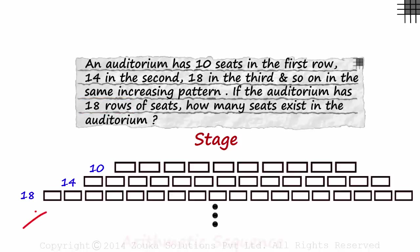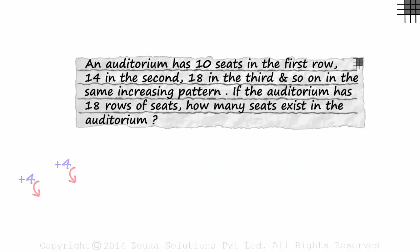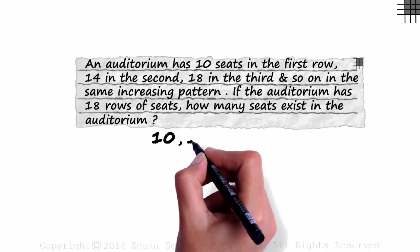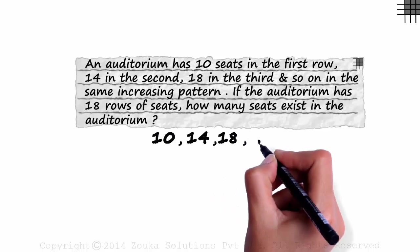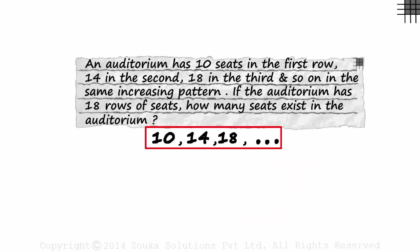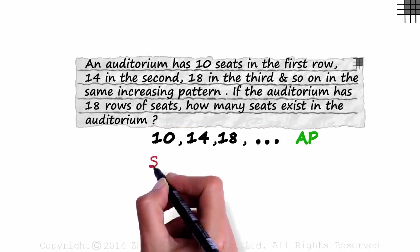This is nothing but an arithmetic sequence. The difference between any two continuous rows is constant. The sequence will be 10, 14, 18 and so on. This is an AP. We have been asked for the total number of seats in the auditorium. It means we have been asked for the sum of this sequence.